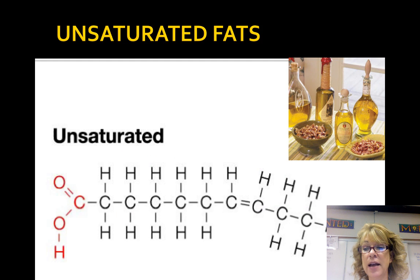An unsaturated fat contains double bonds, preventing the carbon skeleton from having the maximum number of hydrogens. The double bond forms a kink. Therefore, the molecules can't pack tightly together and they form liquids at room temperature. Unsaturated fats are oils found from plants.